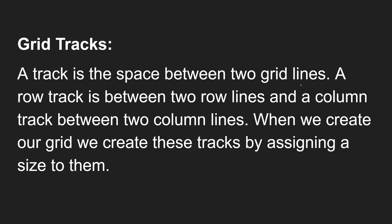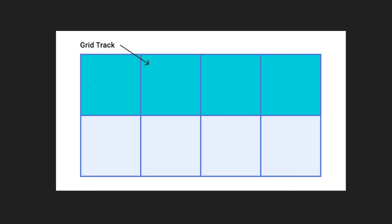The next terminology is a grid track. A track is the space between two grid lines — whether row lines or column lines. A row track is between two row lines, and a column track is between two column lines. When we create our grid, we create these tracks by assigning a size to them. So between two column lines you have a column track, and between two row lines you have a row track.